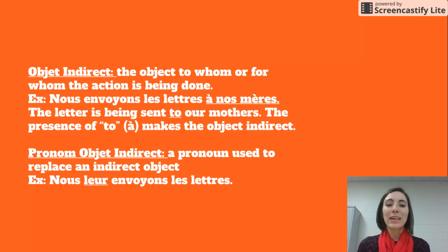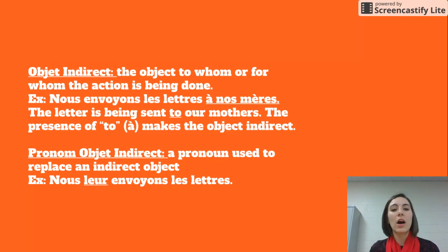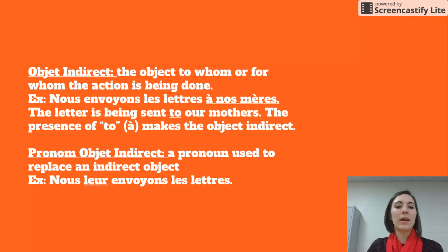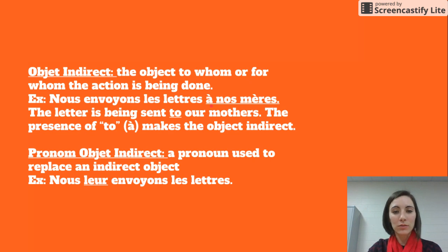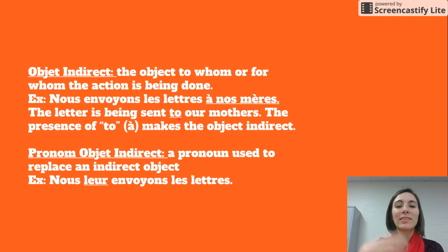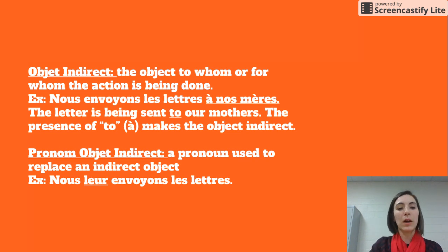Today we're going to talk about objet indirect — indirect objects. These are the objects to whom or for whom the action is being done. For example, nous envoyons les lettres à nos mères. To whom are the letters being sent? À nos mères, to our mothers. The word à, which translates to 'to' in English, is extremely essential because it tells you that you have an indirect object. Other words like pour can also indicate an indirect object.